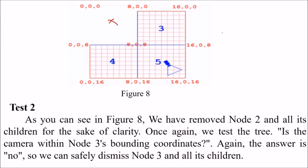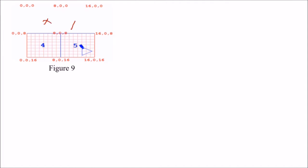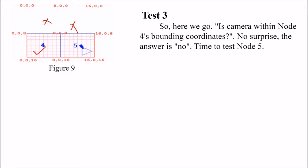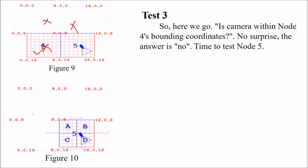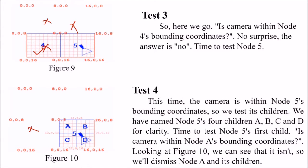In the next figure we have removed node 2 and all its children. We test again: is the camera within node 3's bounding coordinates? No — so we dismiss node 3 and all its children. Test 3: is the camera within node 4's bounding coordinates? No — we remove it again. Test 4: the camera is within node 5. So now we test node 5's children — naming them A, B, C, D.